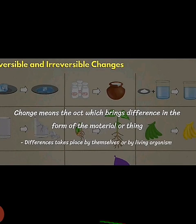When we put air into a balloon, the area and space will increase. When we talk about ripening of fruits, the banana was first green and when it ripened, it turned yellow — change has come. Change means the act which brings a difference in the form of the material or thing. This difference takes place by itself or by a living organism.